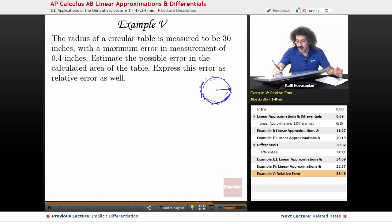In other words, how much of a difference, what's the outside extra area? Or if it's smaller, what's the inside extra area? What's the error in the actual area if I have a possible error of 0.4 away from 30? And express the error as relative error as well.